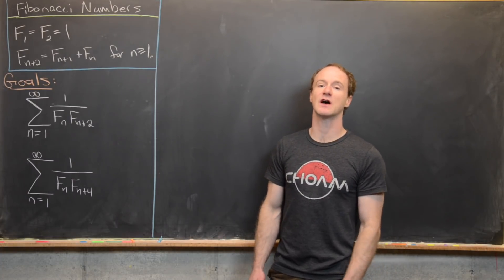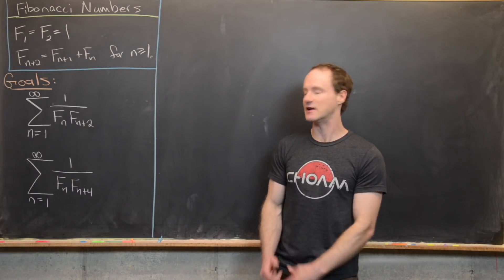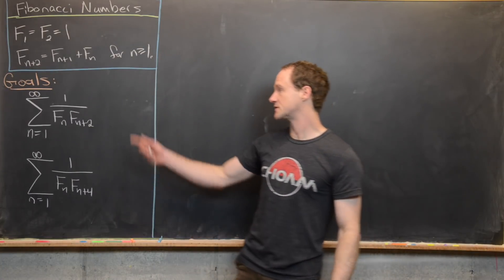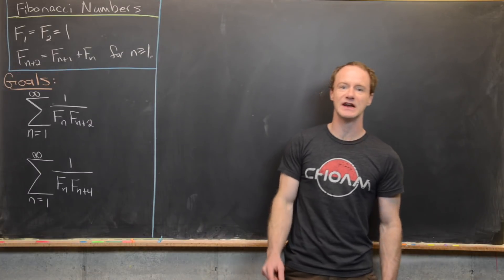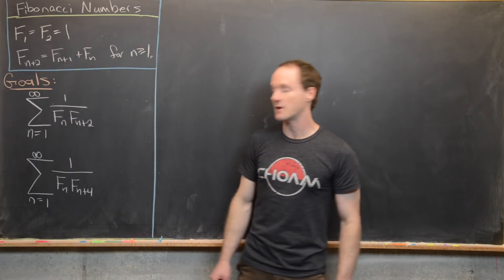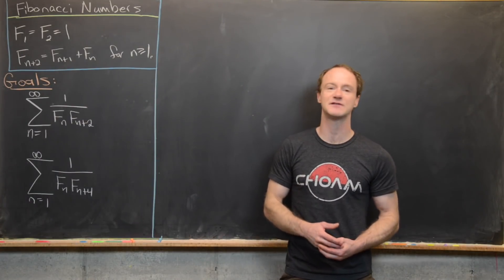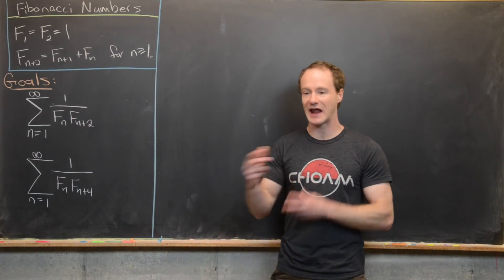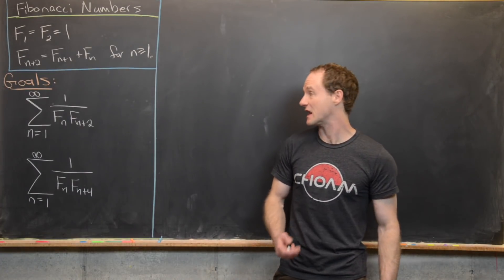We want to look at two members of an entire family of sum identities involving reciprocals of quadratics in the Fibonacci numbers. In particular, we're going to look at the sum as n goes from 1 to infinity of 1 over f_n · f_{n+2}, and then the sum as n goes from 1 to infinity of 1 over f_n · f_{n+4}. This will outline a method for calculating all sorts of similar identities.